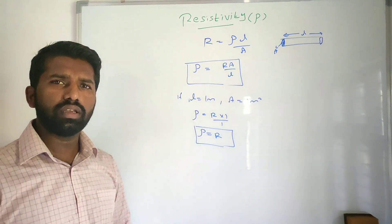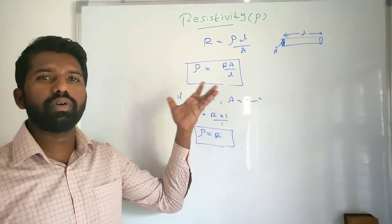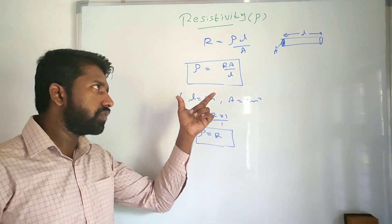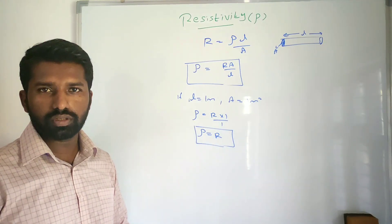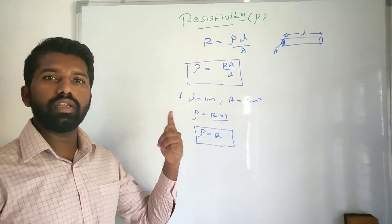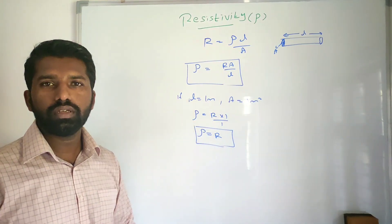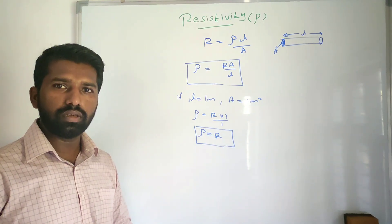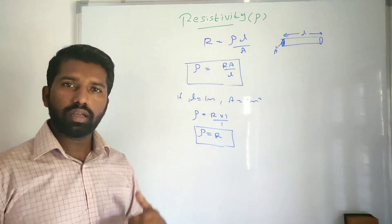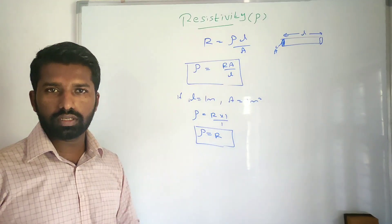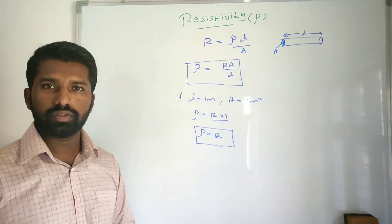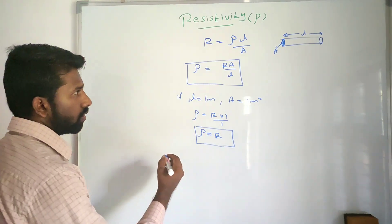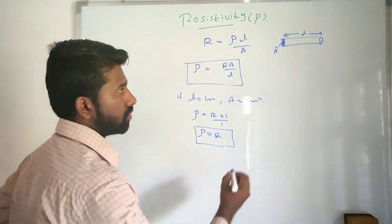From this you can easily understand — this rho is a factor depending upon the material. If you take two different materials, from this we can understand, for a particular material arrangement, how much resistance the material can offer. So now we can define resistivity based on this.